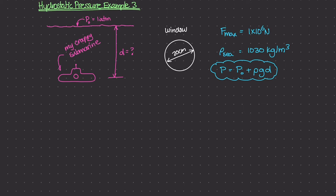In this scenario, we have a submarine at some depth d below sea level. At sea level, the pressure on that surface is one atm or 101.3 kilopascals. On the submarine, we have a tiny window — 20 centimeters wide and eight centimeters thick. The window can withstand a maximum force of 1 × 10⁶ newtons, or 1 million newtons. If a force greater than that is applied, the window would crack and all the water would come inside the submarine, which would be very bad.